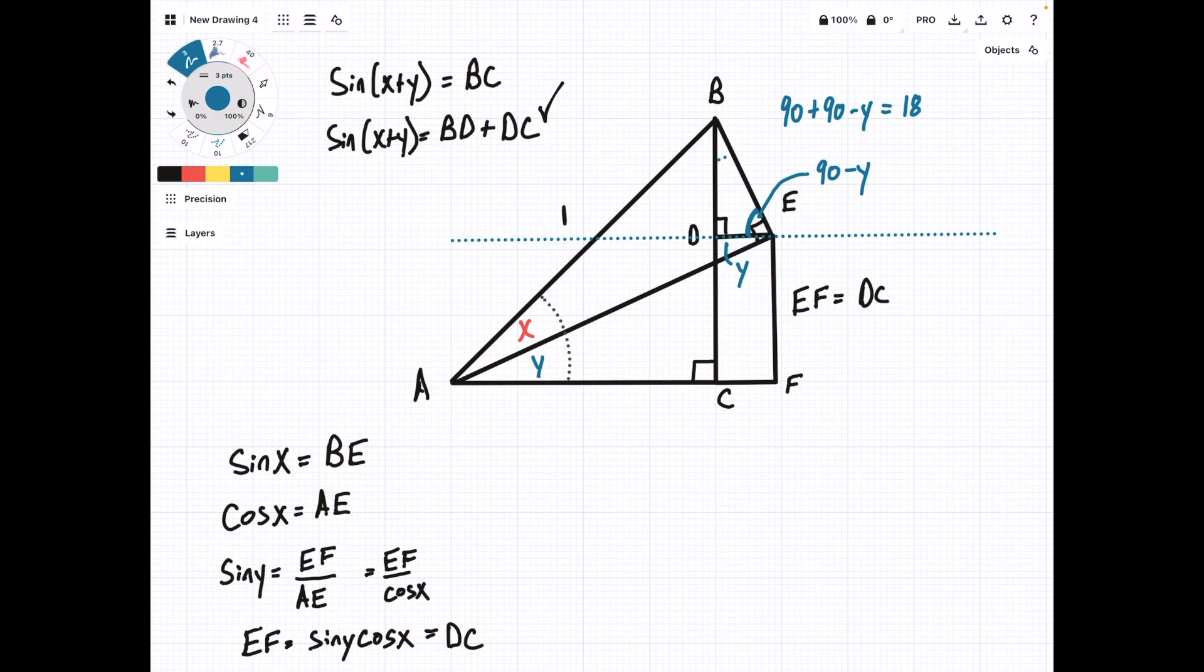At this point, it should be pretty clear that that angle should be Y, because this is going to be 180 minus Y equals 180, so the missing angle should be Y.